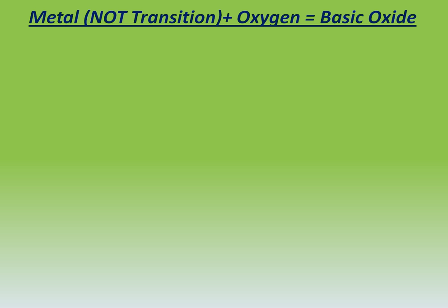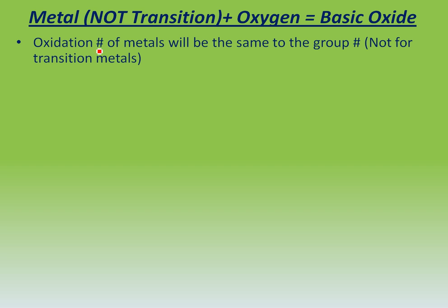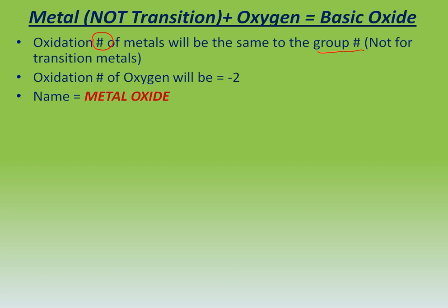We are going to be covering the metals that are not in the transition zone. These metals have a fixed oxidation number, and the oxidation numbers correspond to the group number. If you look at the periodic table, the number that appears at the top is going to tell you the group number for that element. The oxidation number of oxygen is negative 2 whenever it is forming oxides. The names in general are going to be metal oxide — so sodium oxide, calcium oxide, whatever oxide.